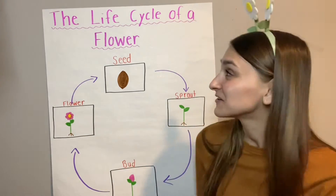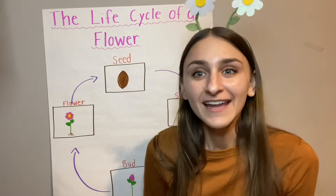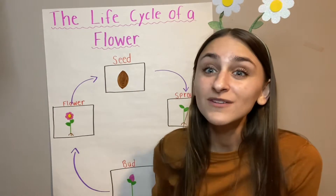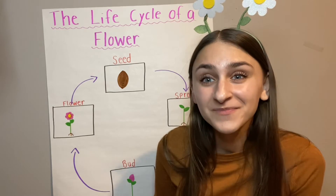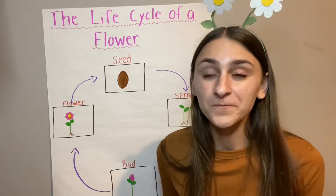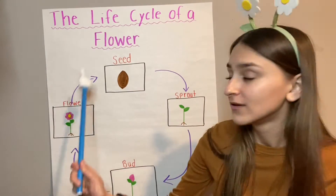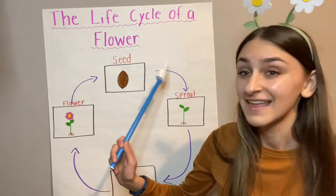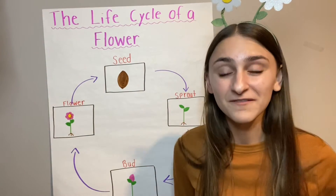Today, we're going to learn about the life cycle of a flower. Now, we've learned about a life cycle of a few different things. Today, we're going to be learning about the flower life cycle. So, what do these arrows mean? Do you remember when it goes in a circle like that? That it's an ongoing process, right? It keeps repeating itself.